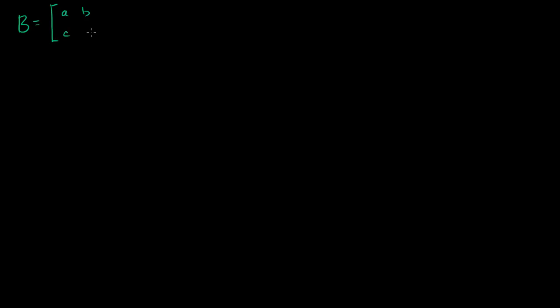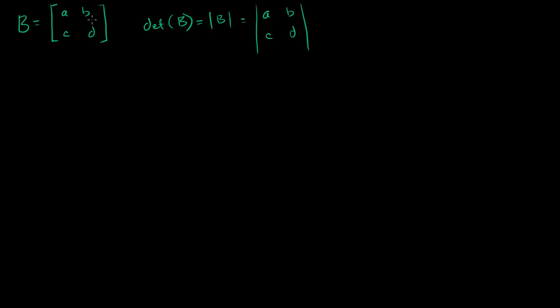In the last video, we defined the notion of a determinant of a 2 by 2 matrix. So if I have some matrix B, with entries A, B, C, D, we defined the determinant of B — which could also be written as B with these lines around it, or as the entries of the matrix with those straight lines — and by definition, that was equal to AD minus BC.